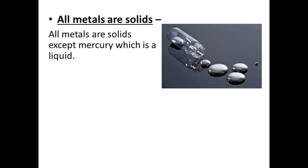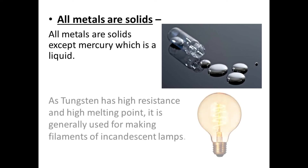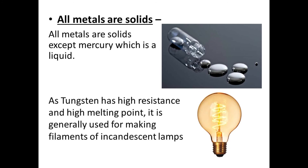Next property: all metals are solid, except mercury, which is a metal that is liquid in state. As tungsten has high resistance and high melting point, it is generally used for making filaments of incandescent lamps. So these are the properties of metals.